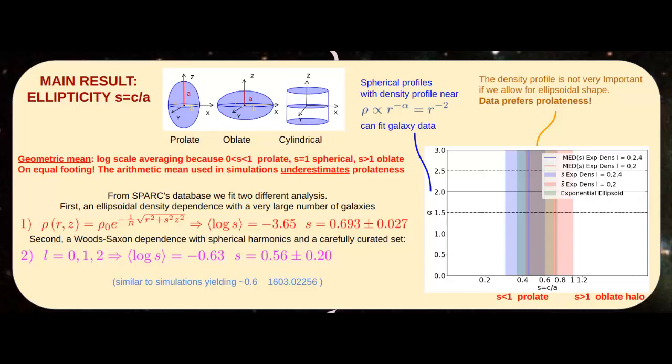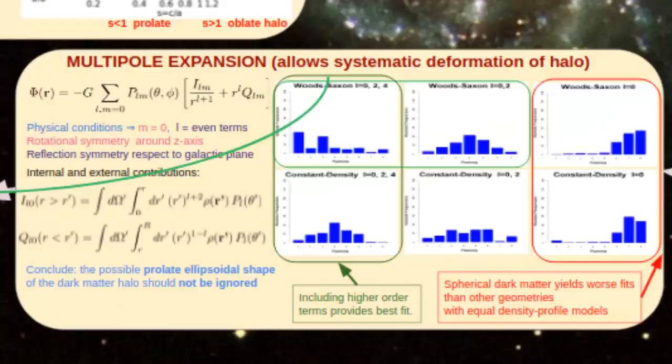In the first fit, we employ a large number of galaxies, removing only a few outliers. We find a clearly prolate average, but with a large uncertainty that also allows the spherical case.